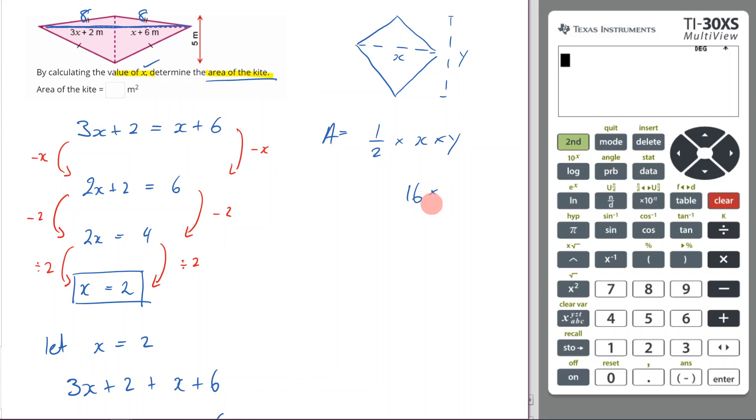Now what is my y length going to be? My y length here is going to be 5, and then I'm going to times that by a half.